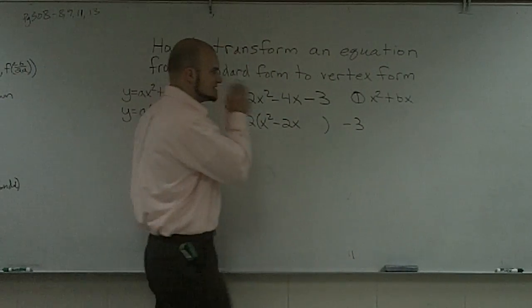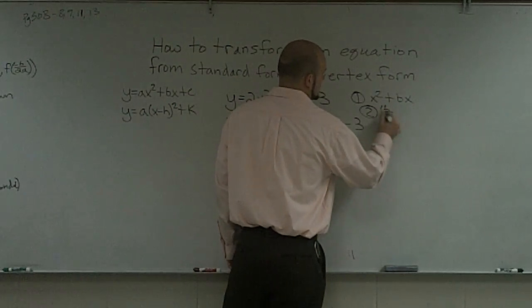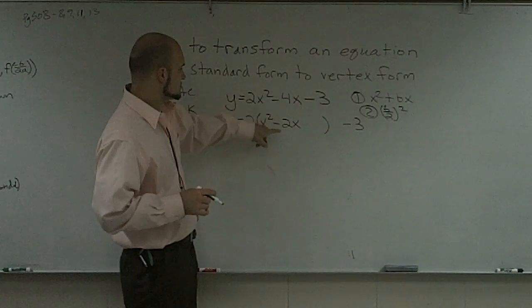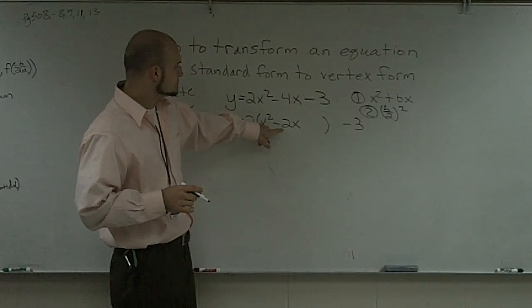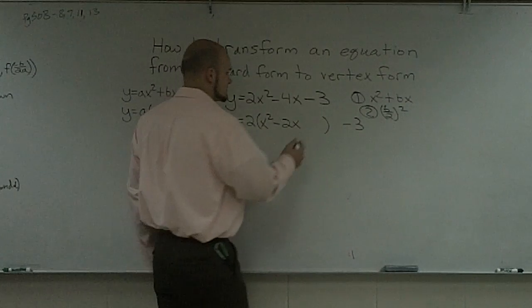Then to go ahead and complete the square, step number 2 is to do b over 2 squared. So b over 2 squared is going to be negative 2 over 2, which is negative 1, squared is going to be a positive 1.